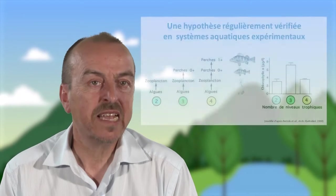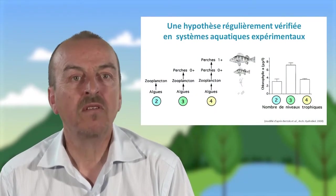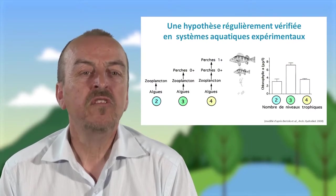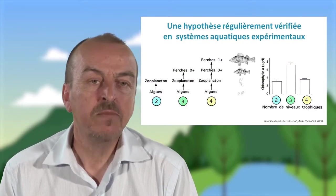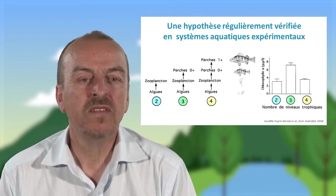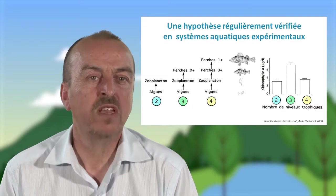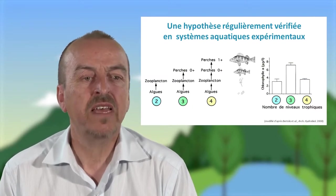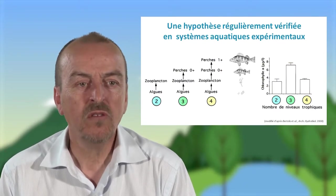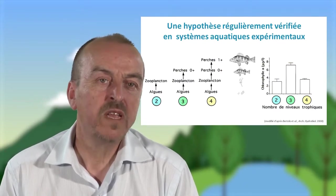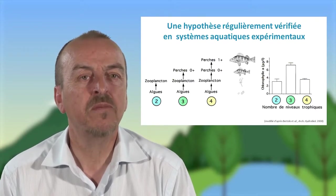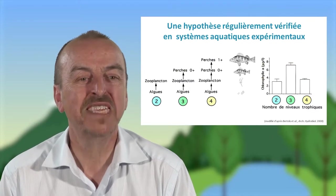Cette hypothèse des cascades trophiques a été vérifiée expérimentalement assez fréquemment. Vous pouvez voir ici une expérience qui a été réalisée dans un petit lac de la banlieue parisienne, dans laquelle les chercheurs ont simulé des chaînes alimentaires plus ou moins grandes. Ils ont travaillé avec des systèmes à deux niveaux trophiques principaux — des algues et du zooplankton —, des systèmes à trois niveaux trophiques — des algues, du zooplankton et des perches de première année, qu'on appelle aussi des perches zéro plus.